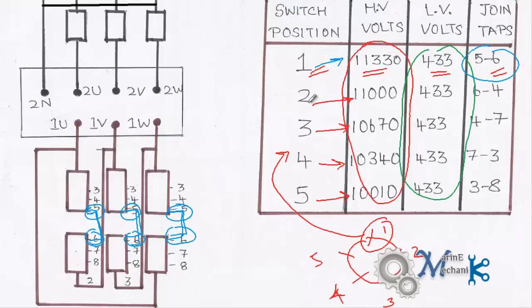So for position number 2, let's say if I select position number 2, I want 11,000 volts at the primary. So the tap position 6 and 4 are joined. So 6 and 4 gets joined. Alright.